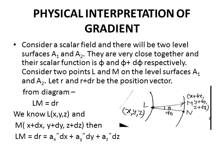Consider a scalar field and there will be two levels A1 and A2. These levels are very close together and their scalar function is phi and phi plus d phi. Consider two points L and M with coordinates for L as x, y, z and coordinates for M as x plus dx, y plus dy, z plus dz. The position vector of L is R and position vector of M is R plus dr.